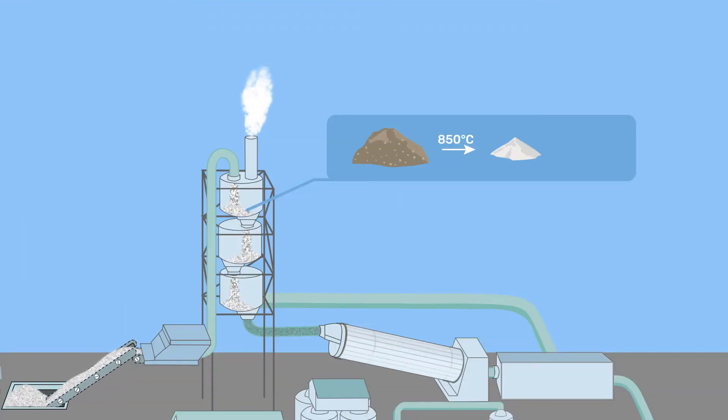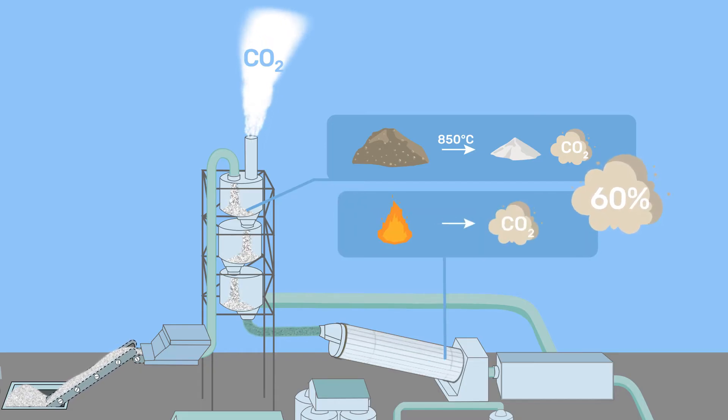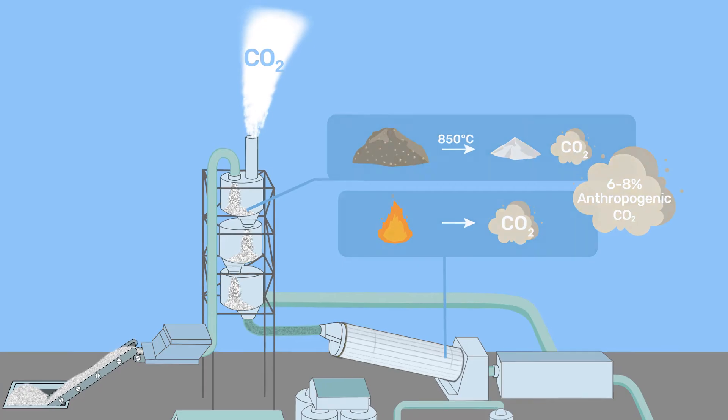The decomposition of limestone accounts for 60% of CO2 emissions from cement production, the rest coming from the combustion of fuel. Overall, cement production accounts for 6-8% of anthropogenic CO2 emissions.